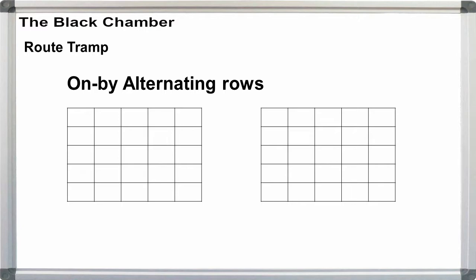Followed by alternating rows. That is, the first row is written on left to right, the second right to left, and then back.